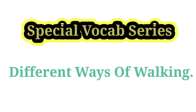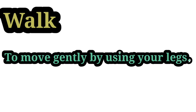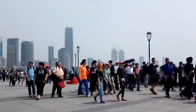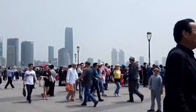Ways of walking की इस सीरीज में आज का हमारा पहला वर्ड है — Walk. जमीन पर चलने के लिए हम walk बोलते हैं. Definition: To move gently by using your legs. यानि चलने या टहलने को ही हम walk बोलते हैं. बहुत सारे लोग सुबह को, शाम को टहलते हैं, घूमते हैं — इसी को हम walk बोलेंगे.